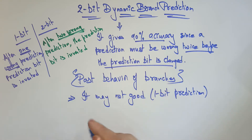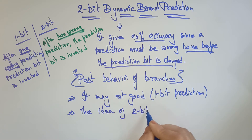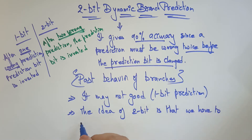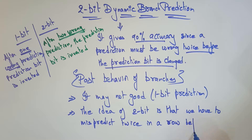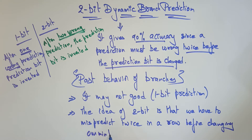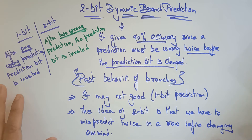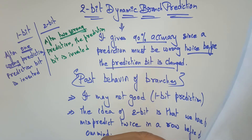Therefore we are using 2-bit branch prediction. The idea of 2-bit is that we have to mispredict twice in a row before changing our mind — think twice. In 2-bit dynamic branch prediction, invert the prediction bit only if two predictions are wrong.